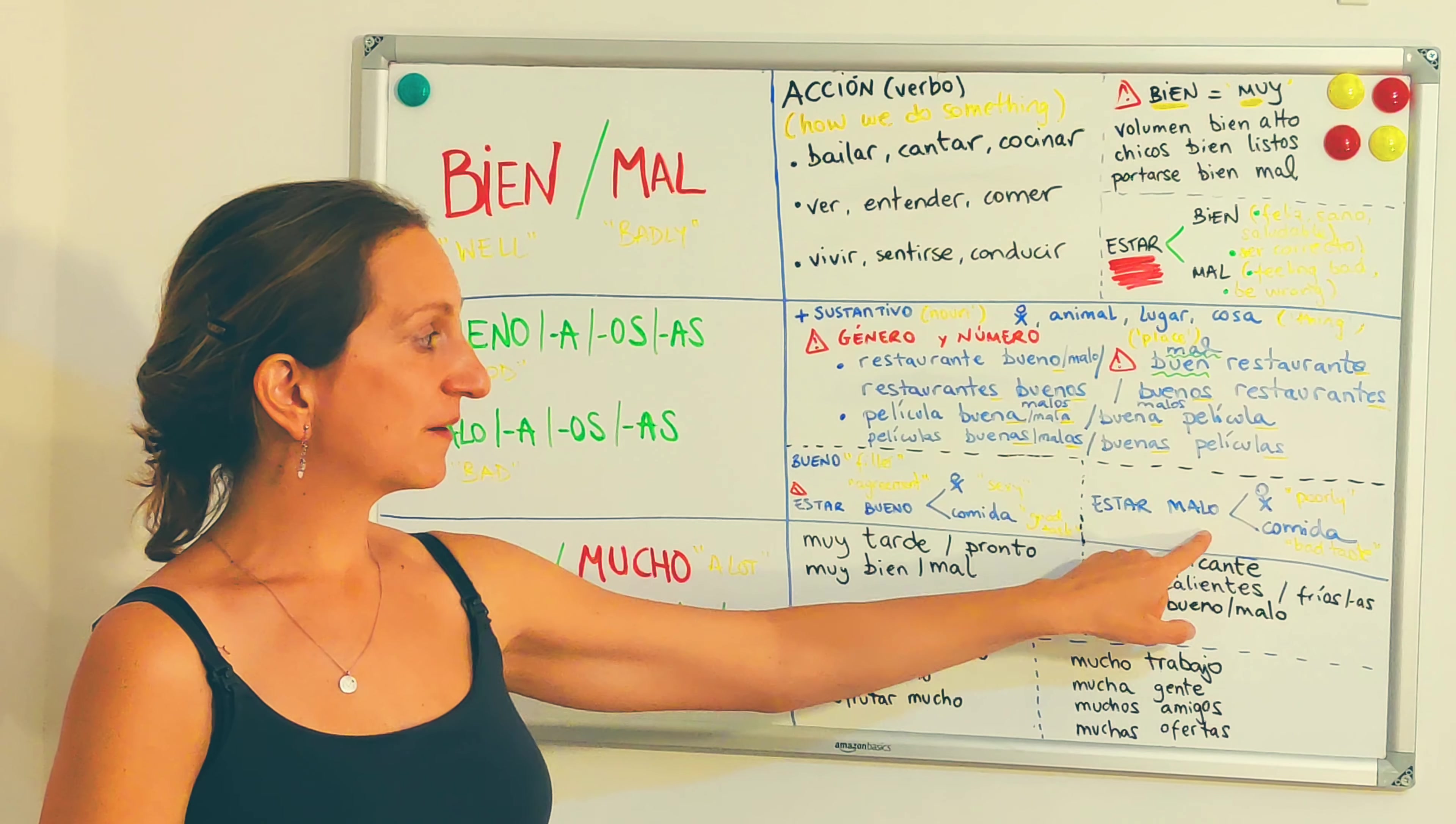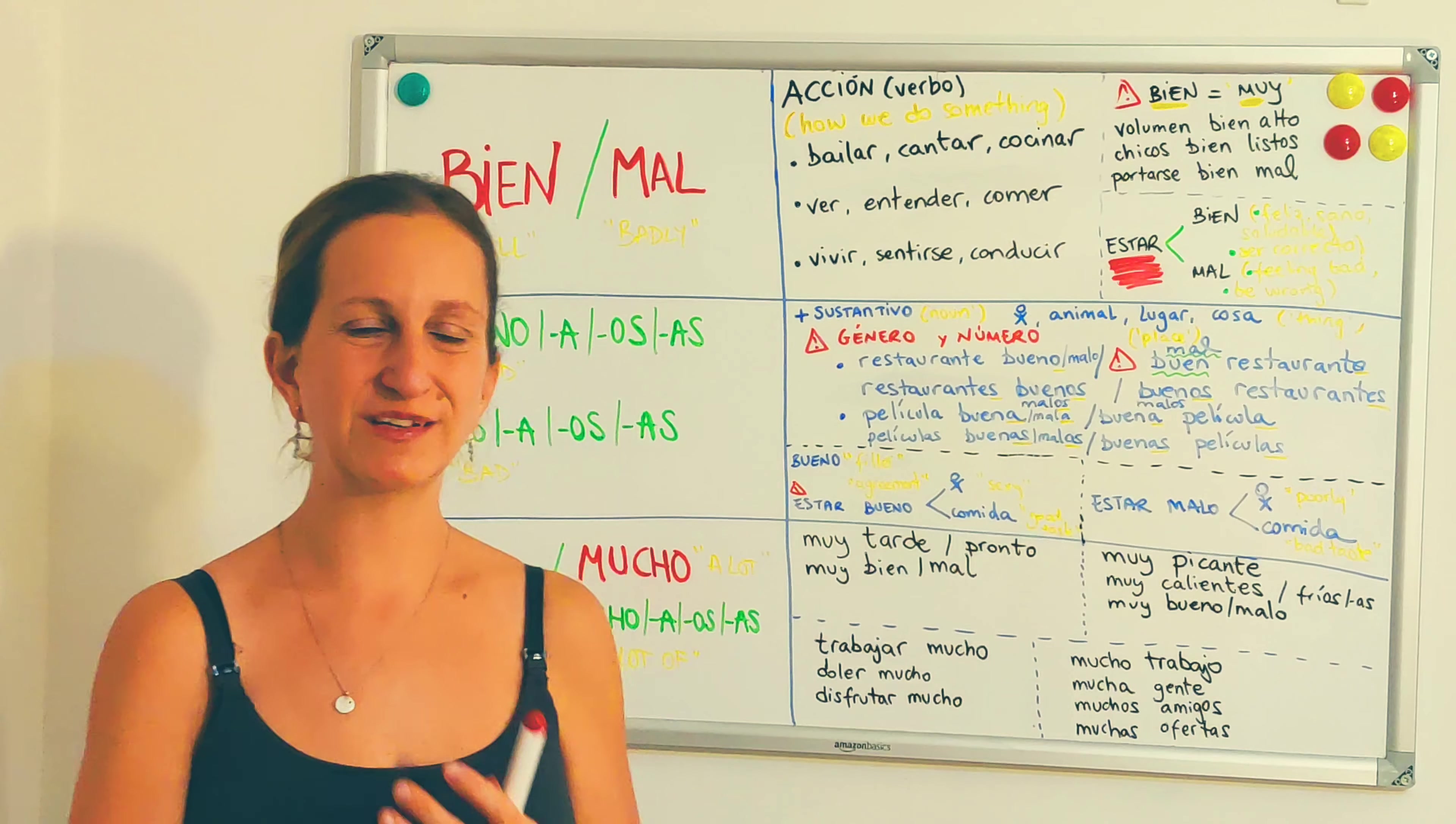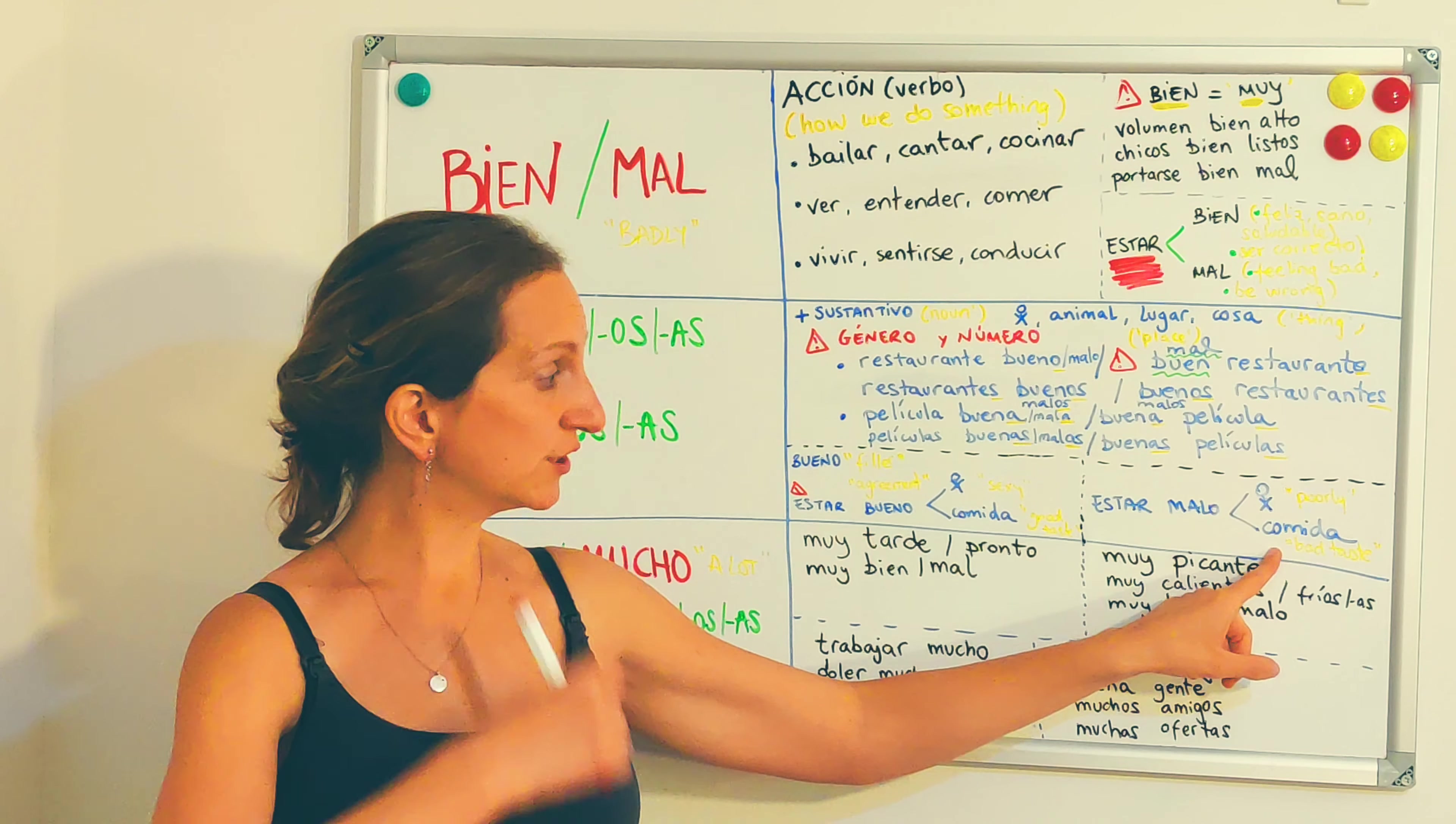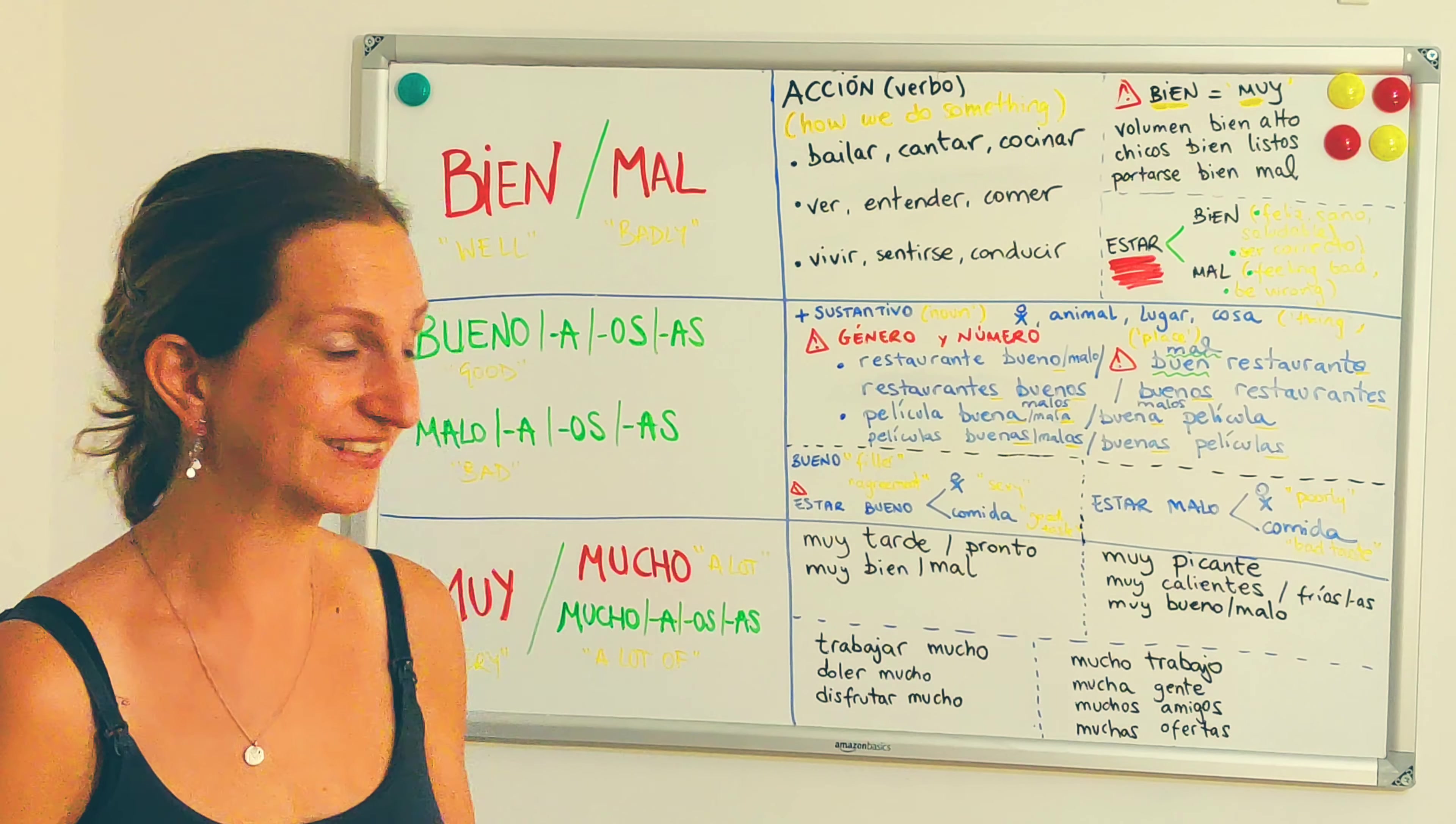But, estar malo para personas, for people, it means that I'm feeling poorly, I feel sick, estoy enfermo. Estoy malo para la comida, the food, it means it's got a bad taste, it's out of date, it's something that you shouldn't be eating, because it's disgusting, right?